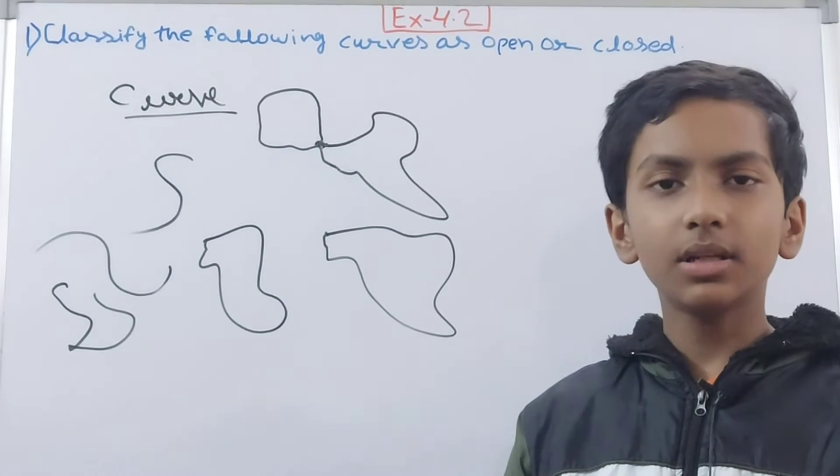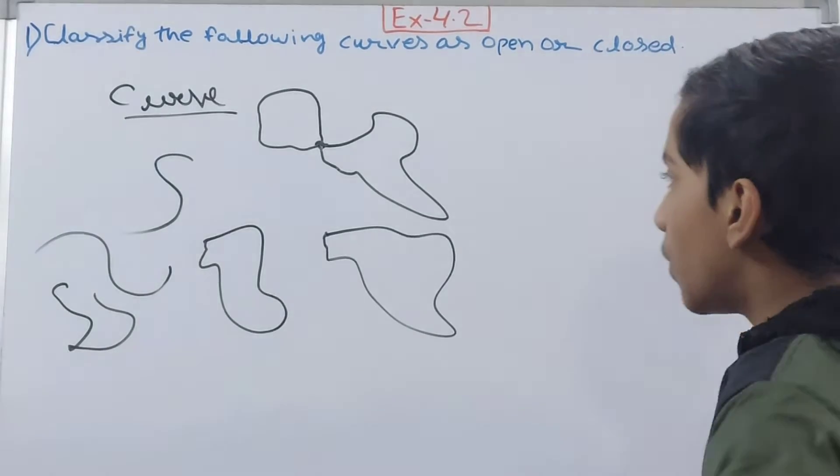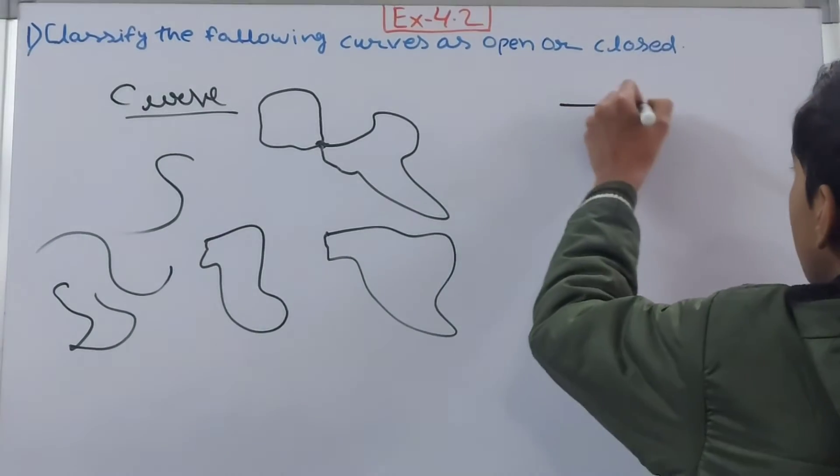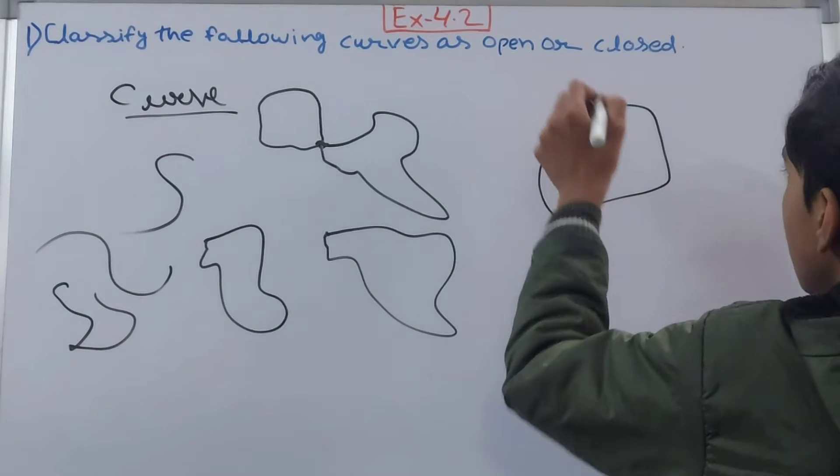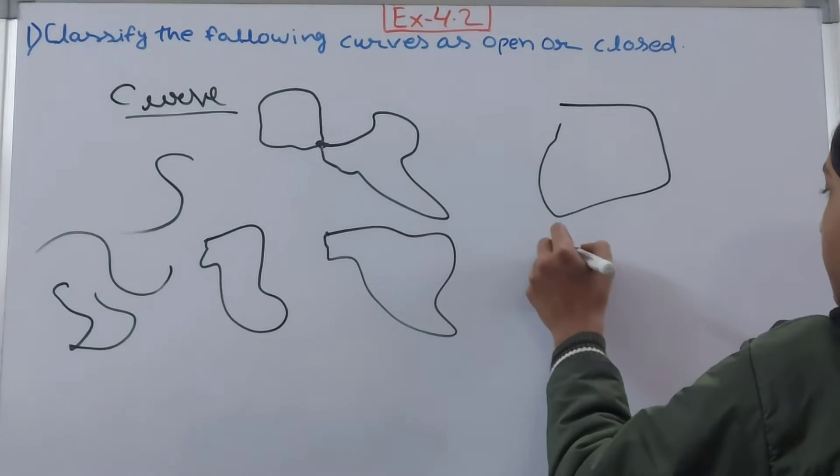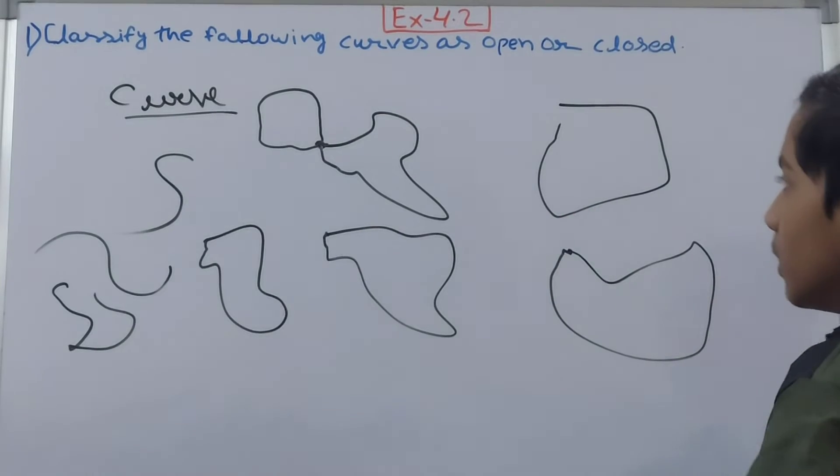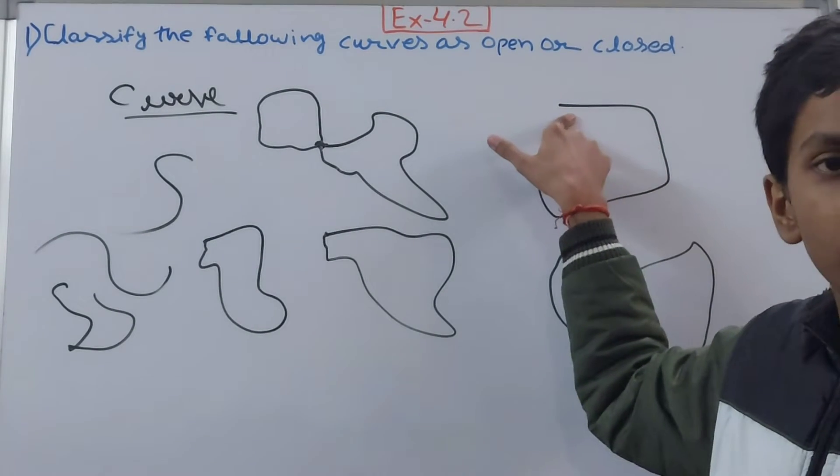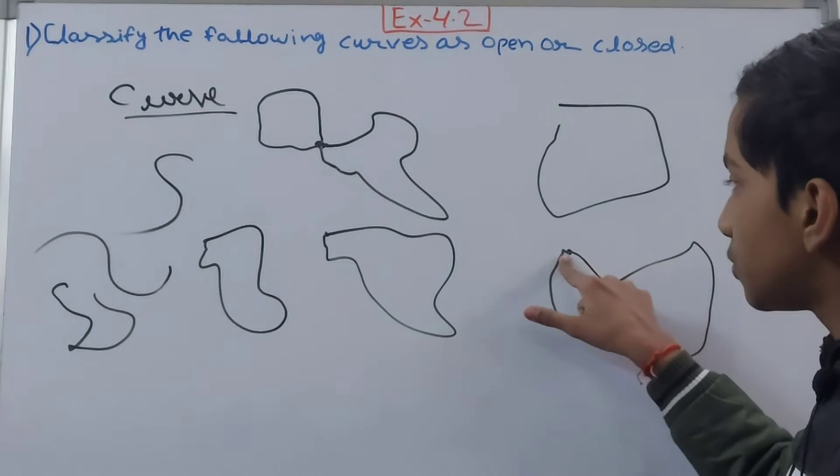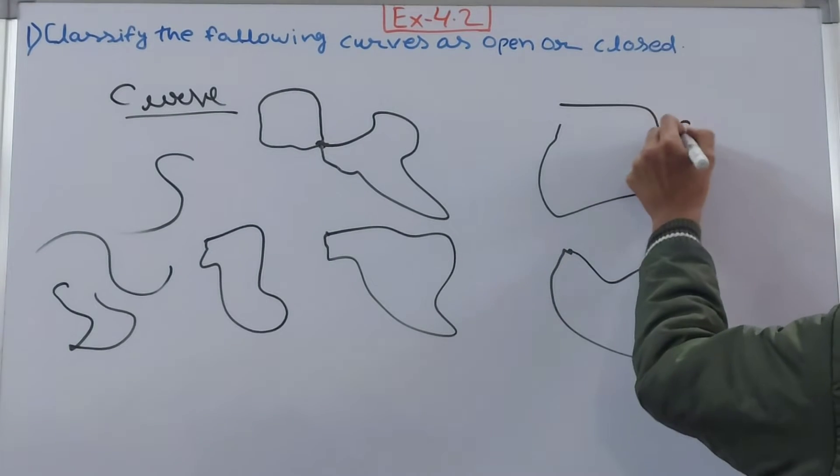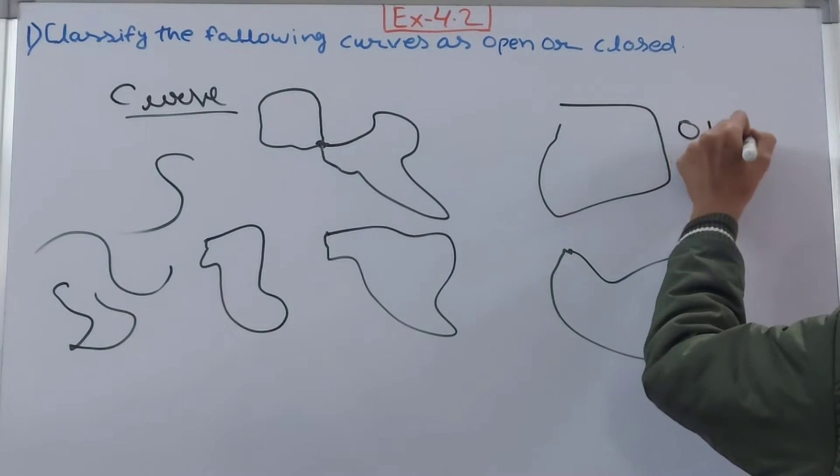And that is classified into two types. What are those? Suppose I draw it like this. This is one, and I draw the other one like this. So now here, this is open, and here this is closed.